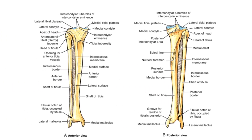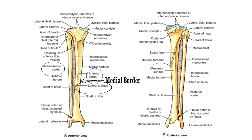Let's have a look. In this image, you can see the anterior border. Medial to it is the medial border, and this sharp border is the interosseous border. Coming to the surfaces — this is the lateral surface, this is the posterior surface, and this is the medial surface. Lastly, this is the soleal line on the upper part of the posterior surface.